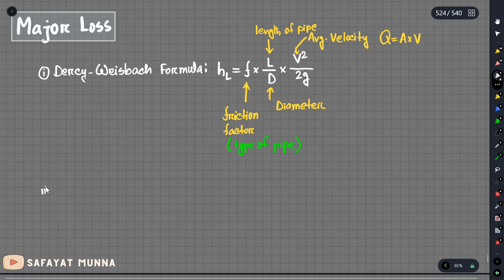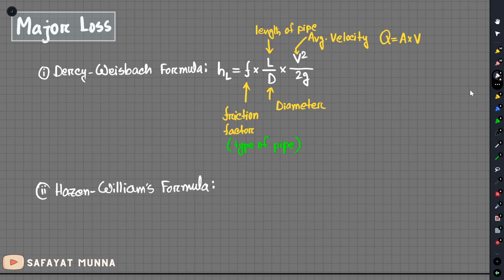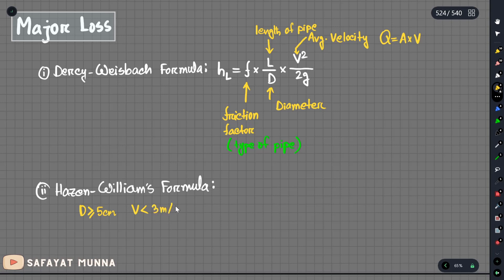The second formula is the Hazen-Williams formula. This formula has a validity range: the pipe diameter must be greater than 5 cm, and the velocity must be less than 3 meters per second.